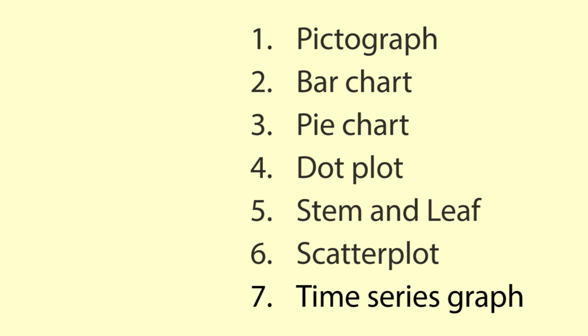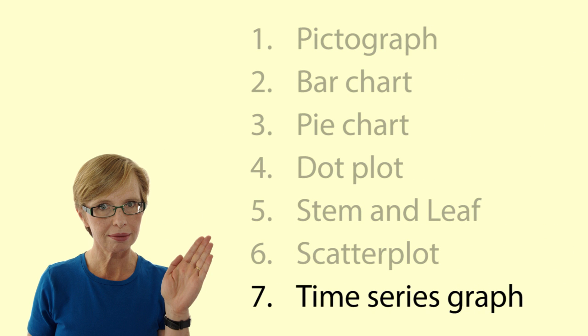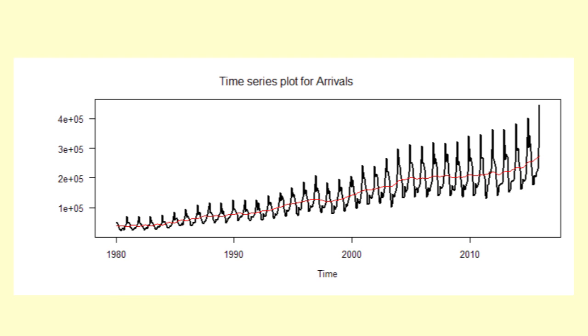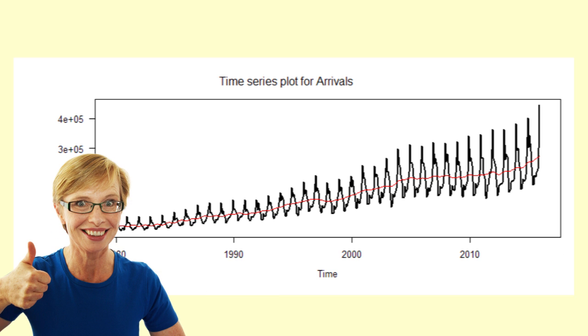Time series plot. A time series plot is a special type of scatter plot. This time series plot shows the number of visitors arriving in New Zealand each month from 1980 to 2015. The horizontal axis is always in units of time, equally spaced. There is one observation for each time value, in this case a month.